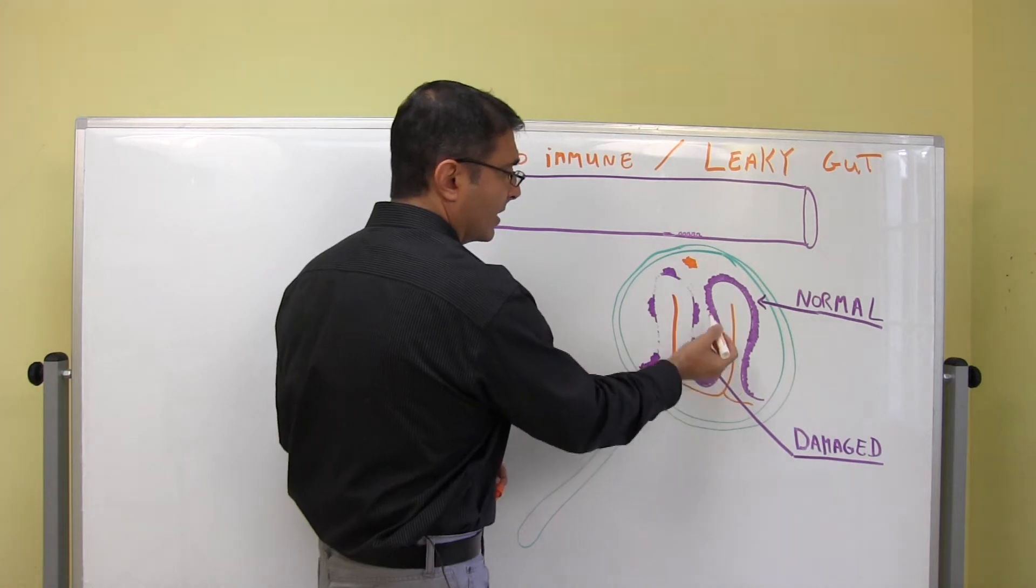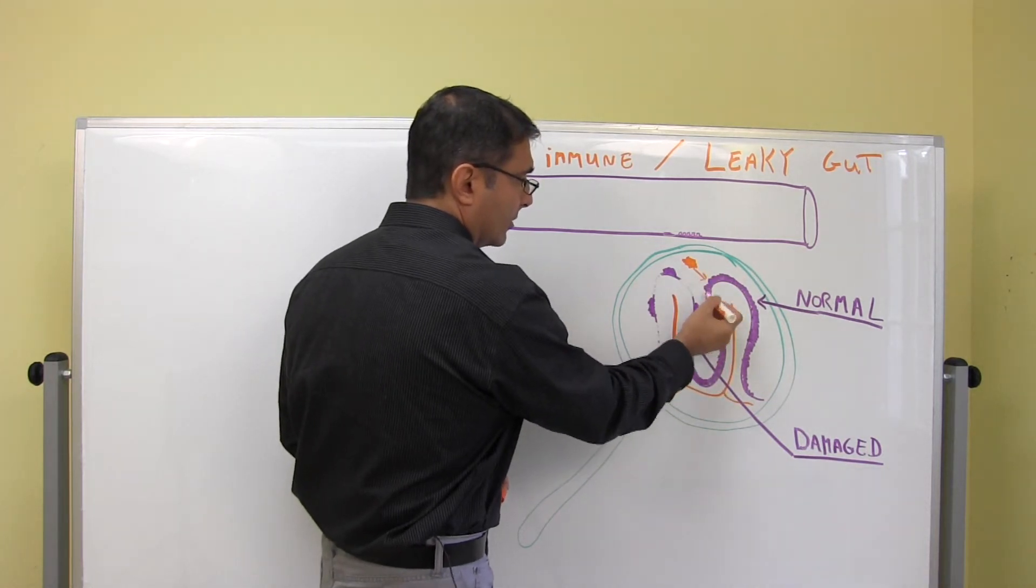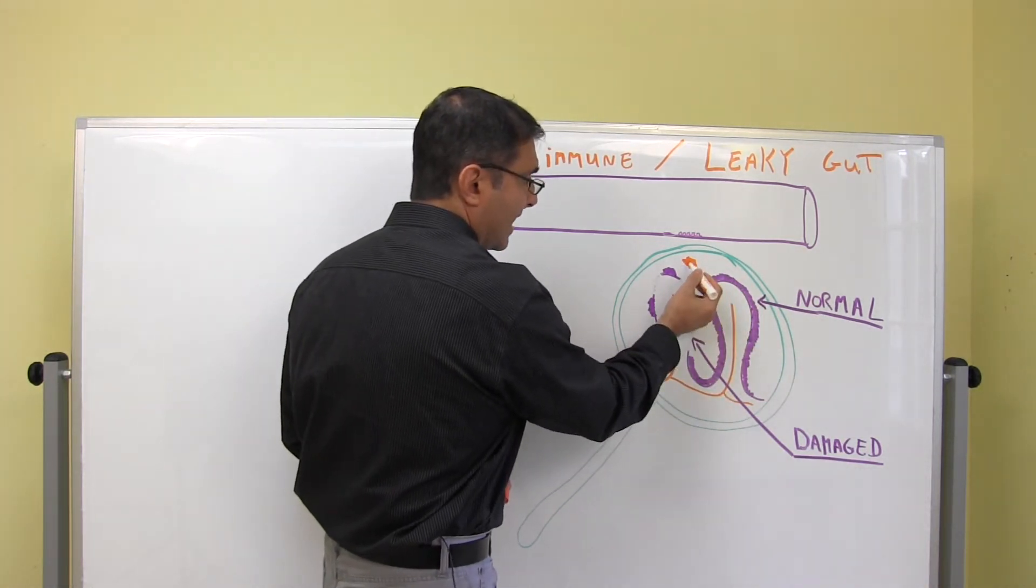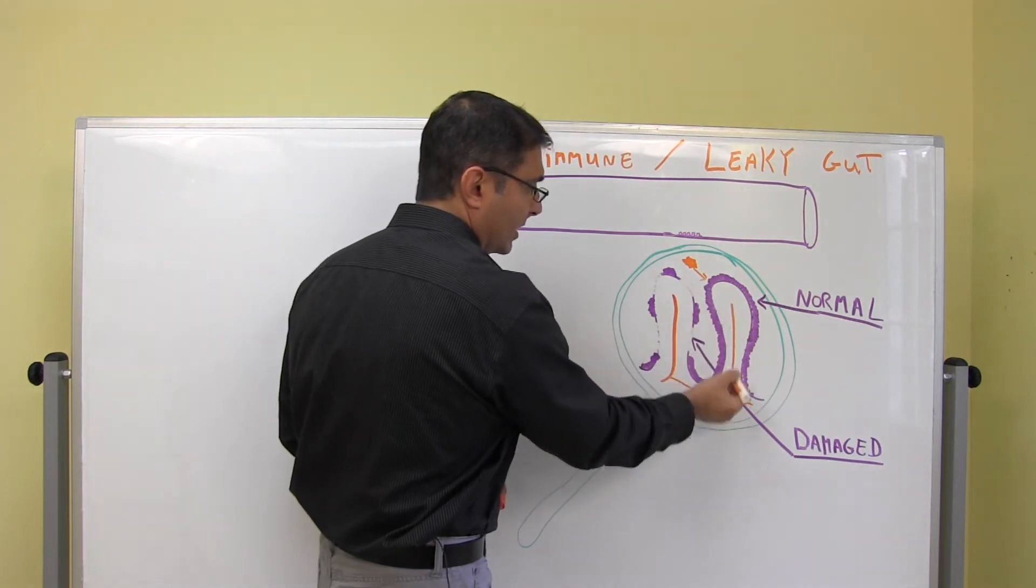Well, with this micro villi here, we have a border. Here's that micro villi border. So that toxin cannot get through the villi into the bloodstream.